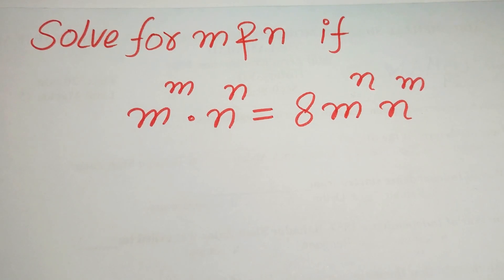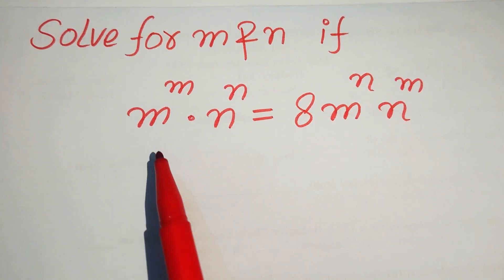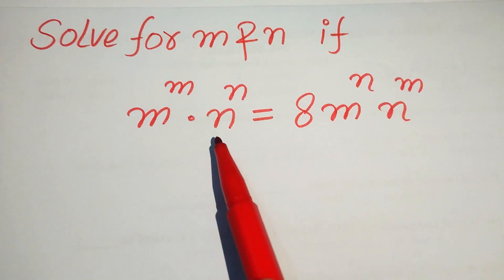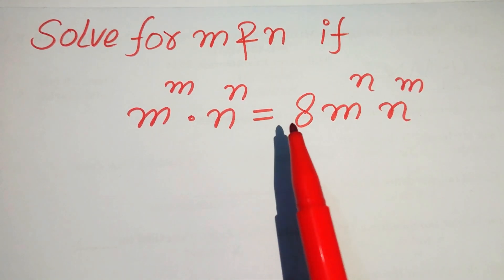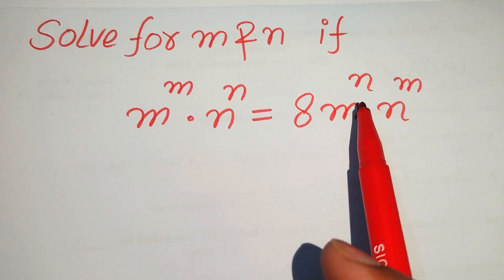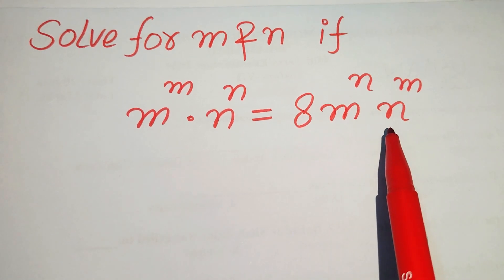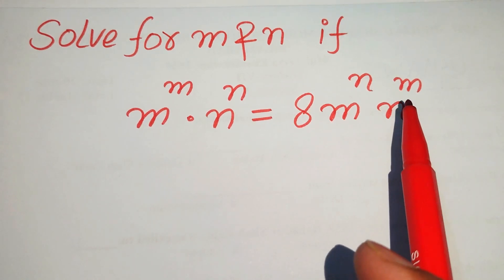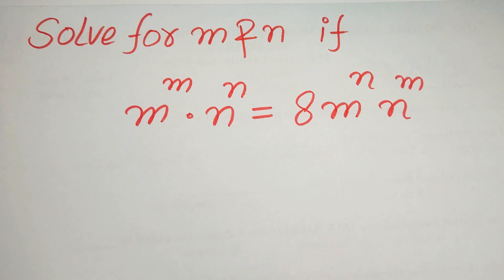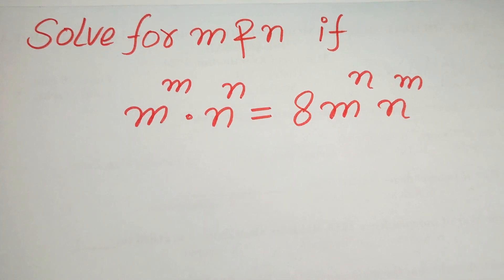Hello everyone, welcome to solve this nice math lumped exponential equation problem. We have m to the power of m into n to the power of n equals 8 times of m to the power of n into n to the power of m. We solve this problem for the values of m and n.